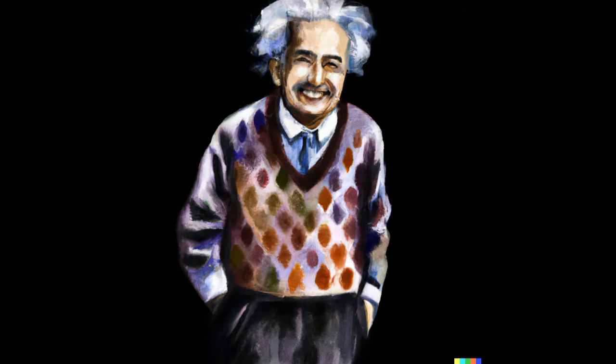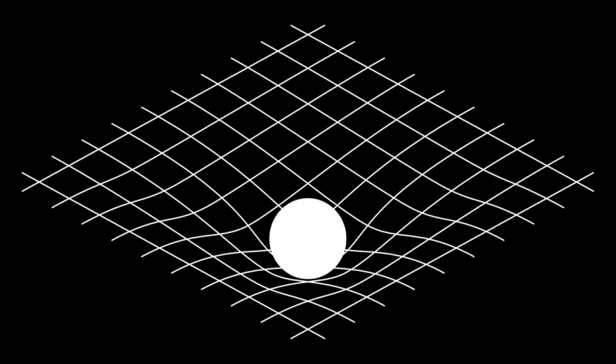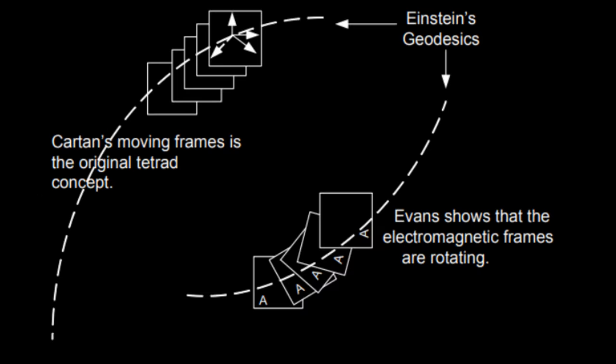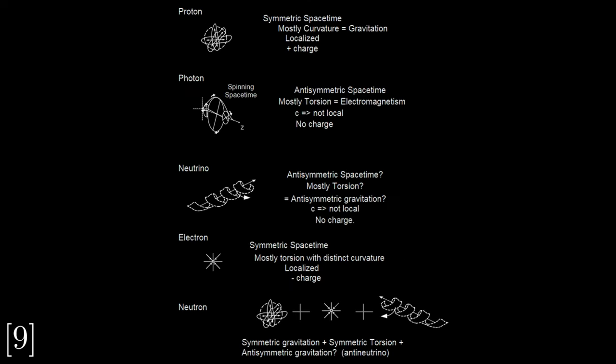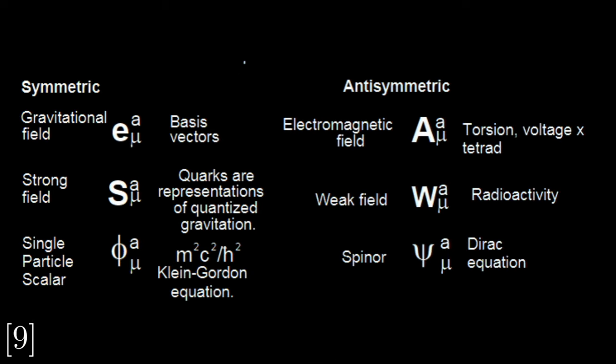First of all, relativity wants you to think in terms of space-time curvature. This theory adds a little twist. It has not only curvature of space-time, but also spin or torsion. Every force, every particle within itself has a combination of curvature, symmetric component of tensors, and torsion, anti-symmetric component.